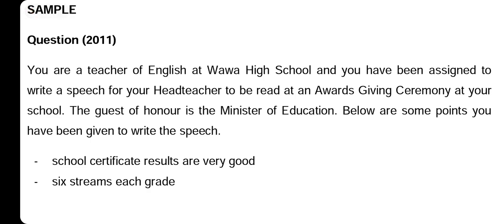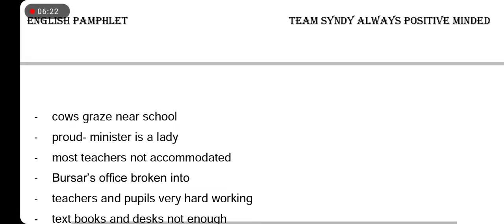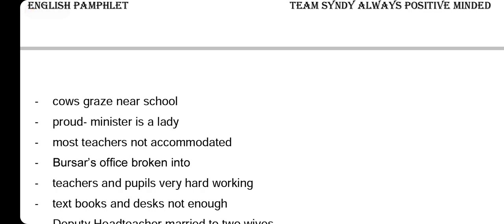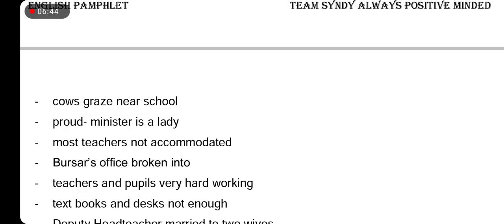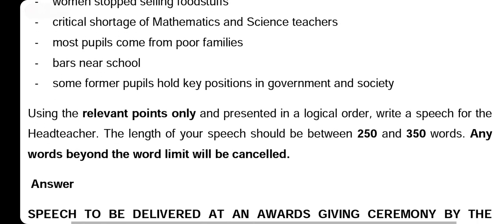The heading for this question is a speech for an award-giving ceremony, so you only pick points that connect to that heading. For example, a point like 'cows graze near school' is not connected to an award ceremony and should not be included. Also, the given points are not in order — arrange them with your pencil, numbering them one, two, three, four. Each point does not need its own paragraph; you can combine two or three points into one paragraph.